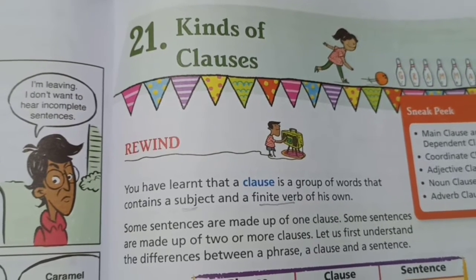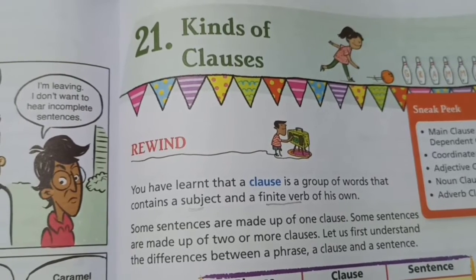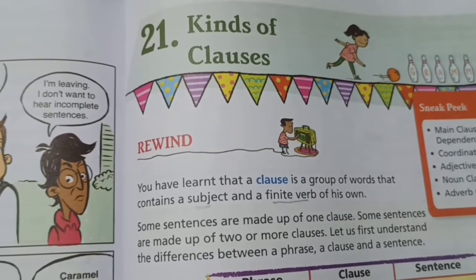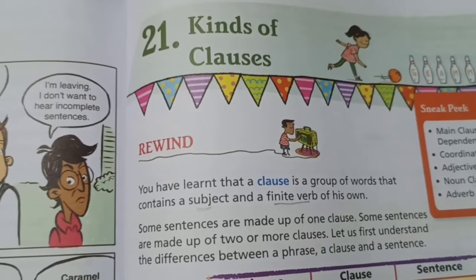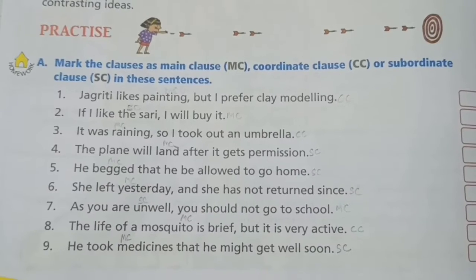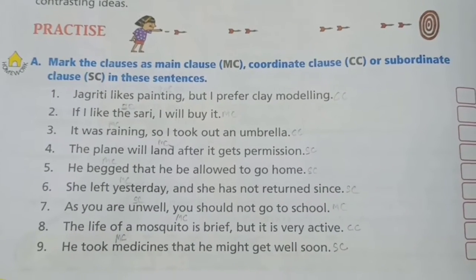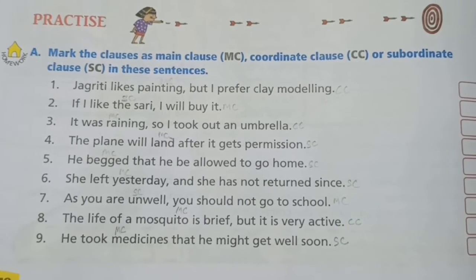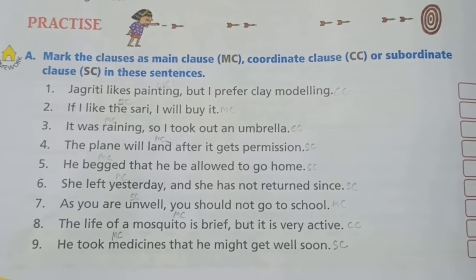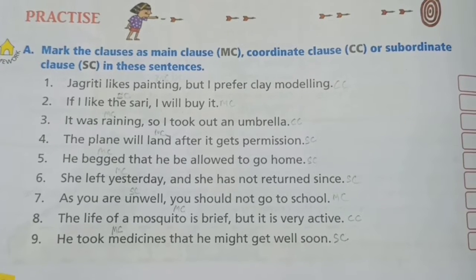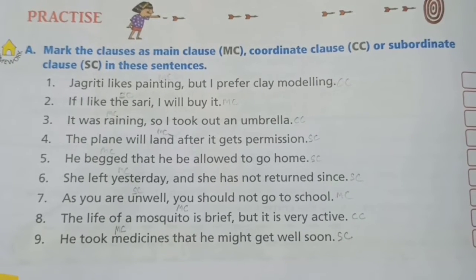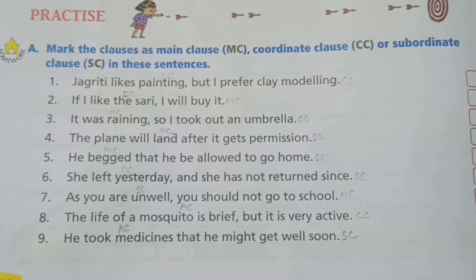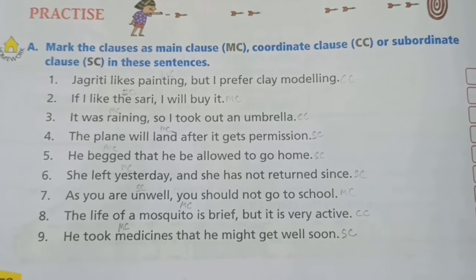Hello dear students. In this video we will see exercises of Lesson 21 'Kinds of Clauses' for Class 8. In Exercise A, mark the clauses as main clause, coordinate clause, or subordinate clause. In each of the sentences you will find two clauses — one will be the main clause and another will be subordinate or coordinate clause.